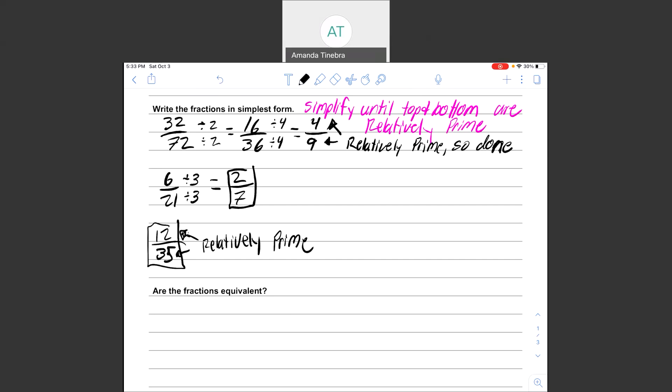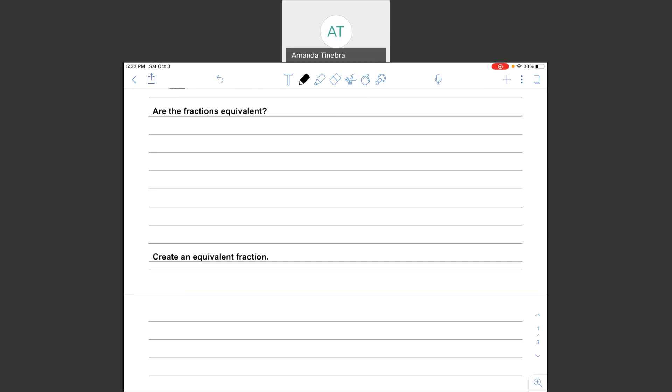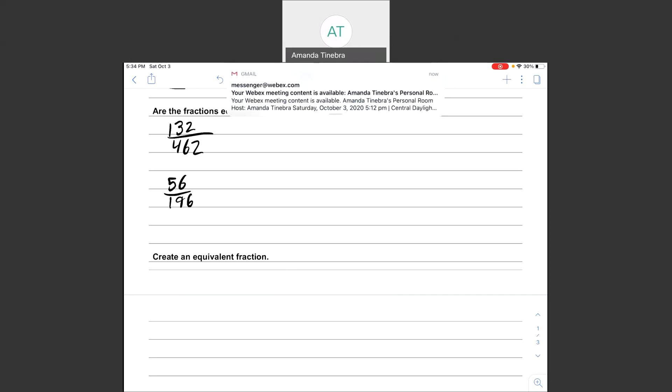That's how we write fractions in simplest form. The second type of problem is whether two fractions are equivalent. I want to tell whether the fraction 132 over 462 is equivalent to the fraction 56 over 196. Now these are two huge fractions, and looking at these, I'm not sure if they're the same or not. They look really different to each other, but we're going to simplify these and see if they simplify to the same fraction. 132 over 462—the first thing I think of is that these can both be divided by 2.